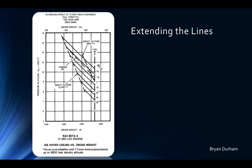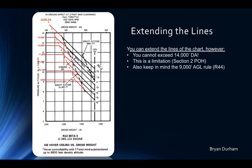A common issue for students at stage checks is not understanding what extending the lines means or how to apply it. The lines stop at 12,600 feet. If you have conditions at 1,250 pounds and 40 degrees Celsius but there's no temperature line there, you can extend the lines. The important thing is that we only extend them up to a pressure altitude that would require a limitation — specifically the 14,000-foot density altitude rule.